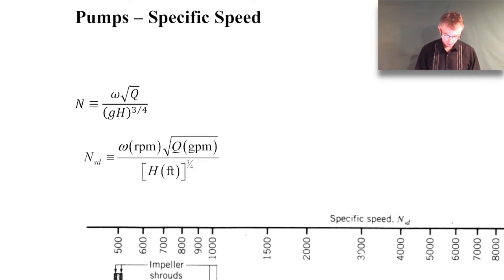And so the key parameter for calculating specific speed is right here. N is our specific speed, and it's defined as the rotational speed of the pump, omega, times the square root of the flow rate through the pump, Q, divided by g, which is the acceleration due to gravity, and H, which is the head rise across the pump, all raised to the three quarters power.